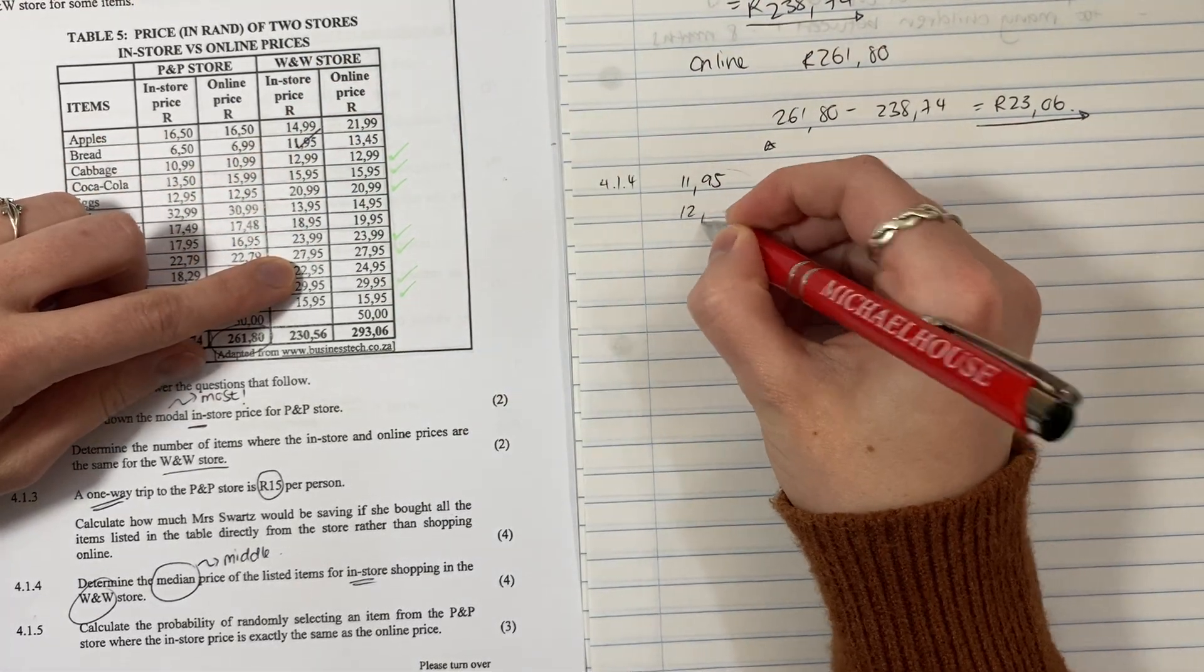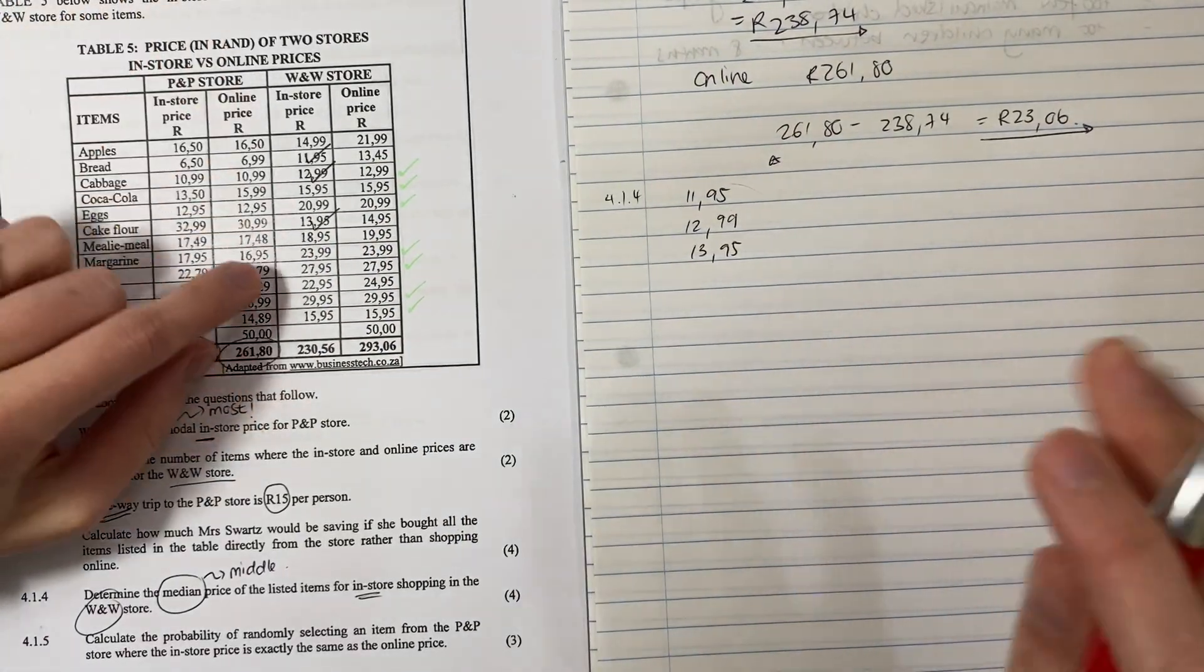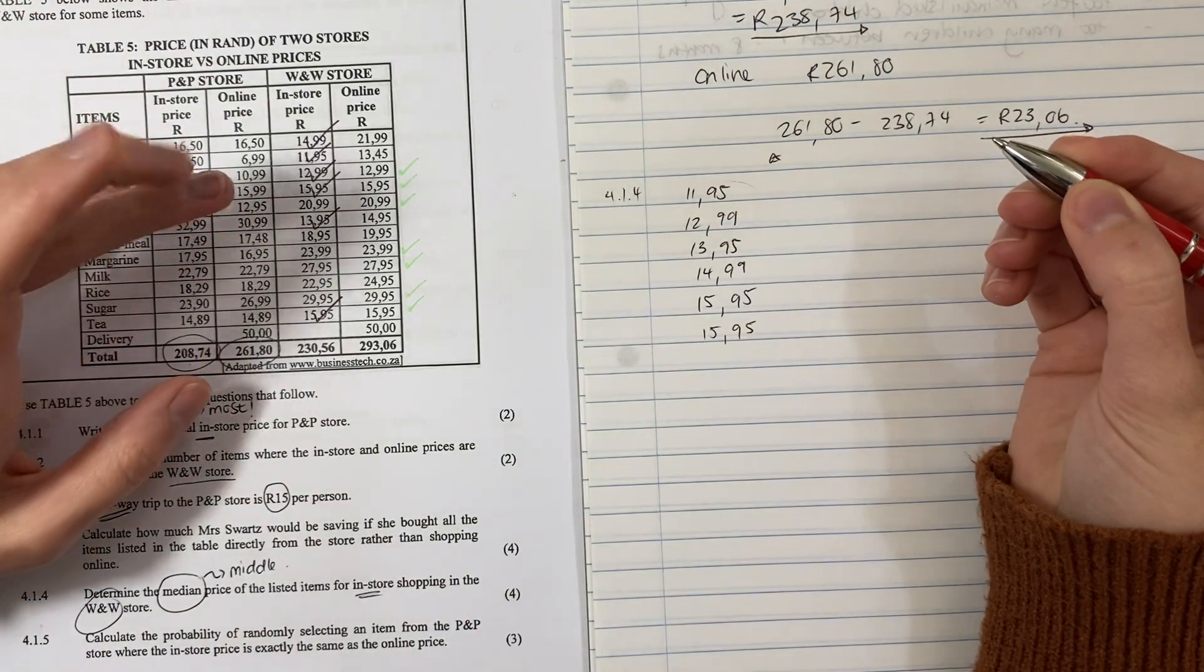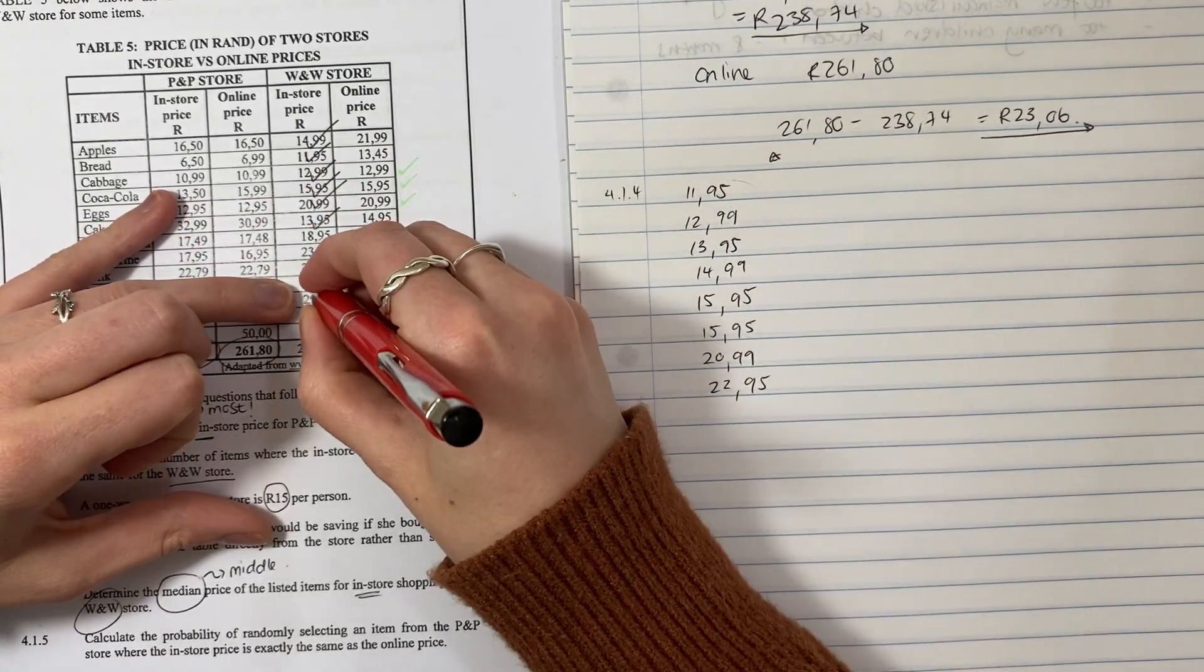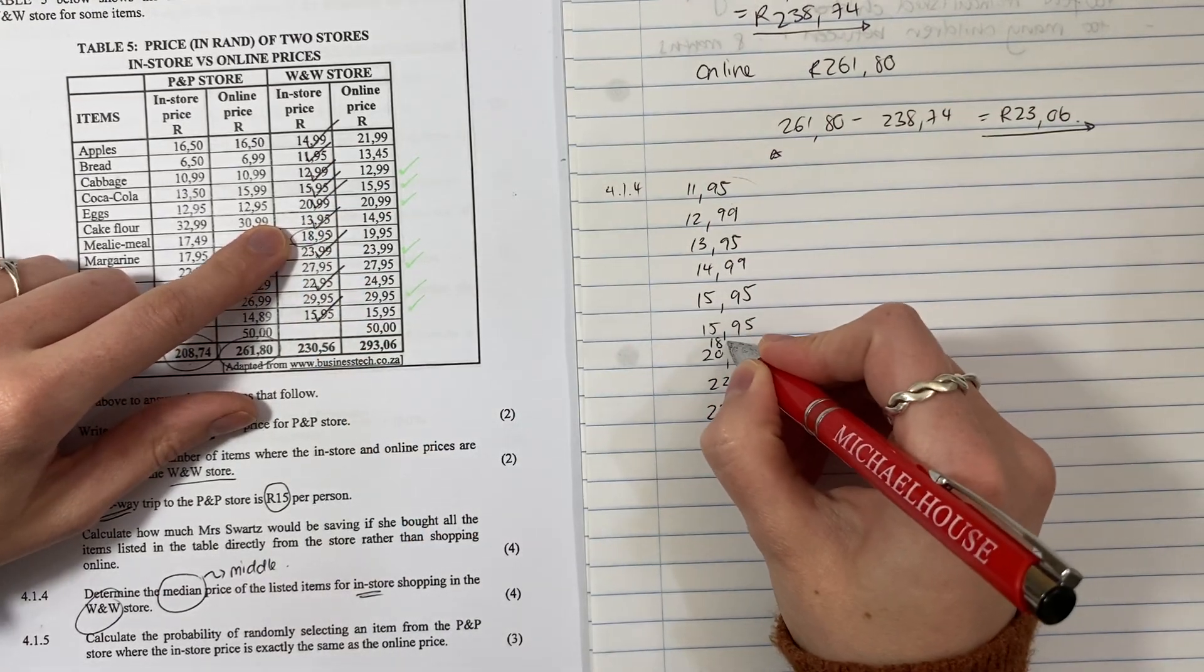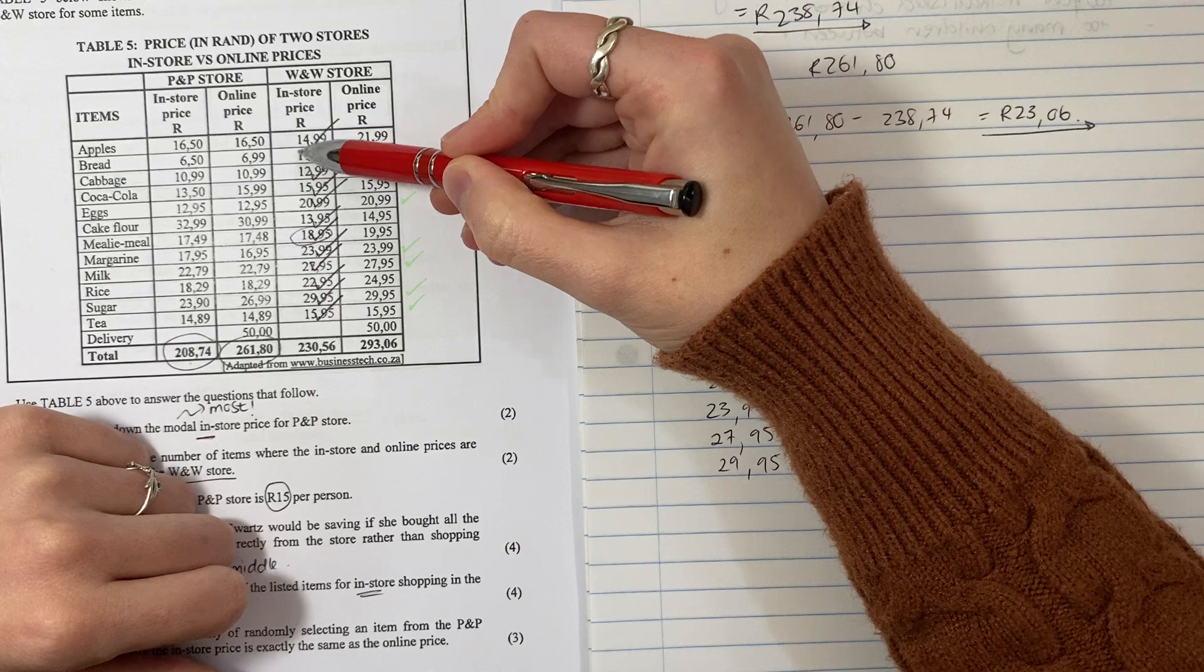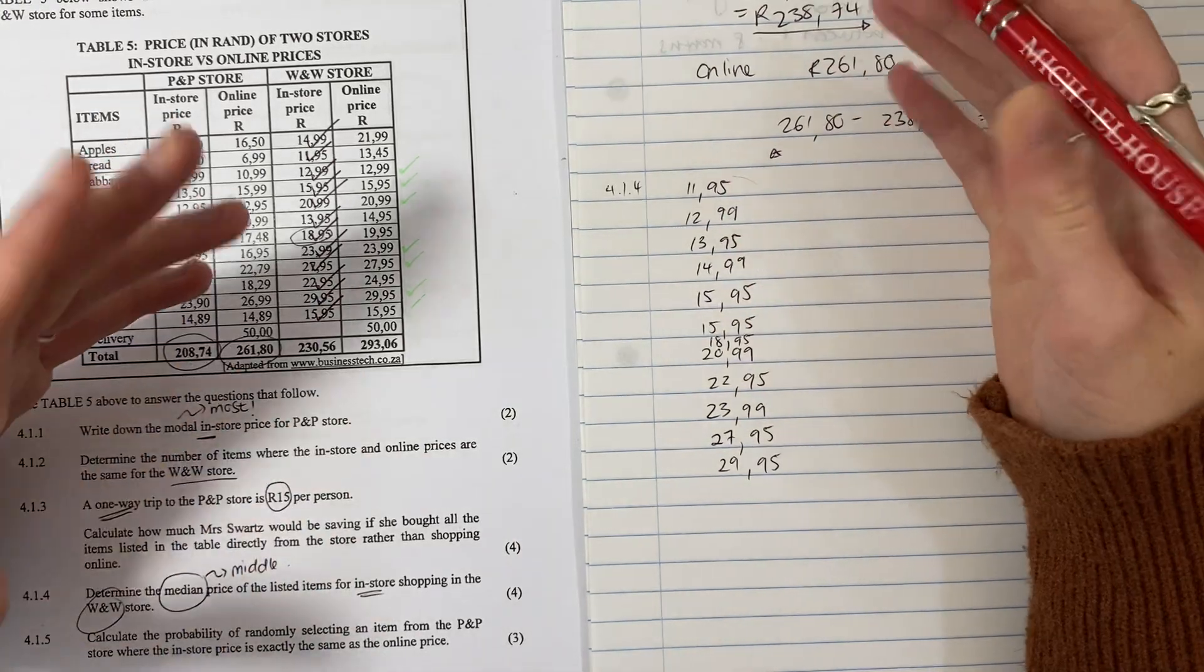11.95, tick it off. Then what's next? 12.99. 13.95. We're doing quite well. Then it's 14.99. 15.95. Another 15.95. Be careful, just because it's the same numbers doesn't mean you don't write it twice. Then we've got 20.99. 22.95. 23.99. Oh, we made a mistake. We didn't look at 18. So I'm going to put it in here, 18.95. See, it's easy to make mistakes here. 27.95. 29.95. How many were there? One, two, three, four, five, six, seven, eight, nine, ten, eleven, twelve. I've accounted for all of them. It's going from smallest to biggest.